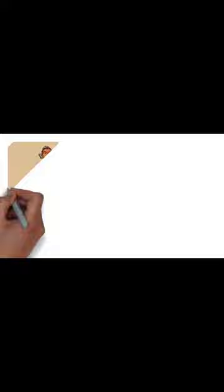He was born stuttering and couldn't argue well, but he was good at writing papers. He served Xunzi with his friend Li Si, who admitted that he was not as competent as Hanfei.